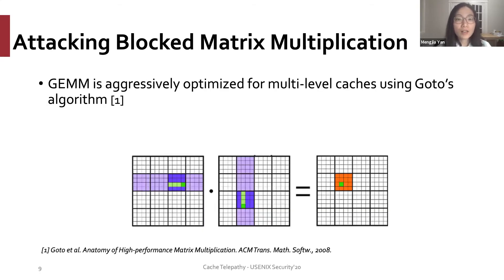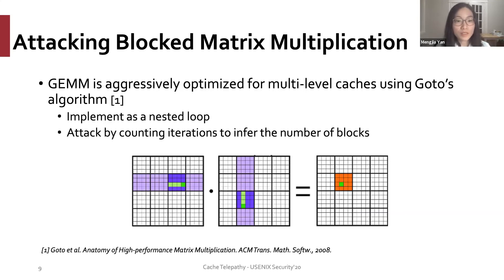Let's consider how to attack blocked matrix multiplication. Blocked GEMM is aggressively optimized for multi-level caches using GOTO's algorithm. More specifically, blocked GEMM is implemented as nested loops. Each iteration of a loop handles one block on a certain dimension so we can use cache-based side channel attacks to track the execution of the loops, count the number of iterations for each loop, and infer the number of blocks for each dimension.